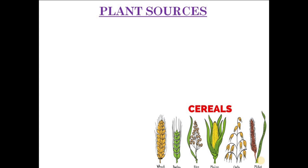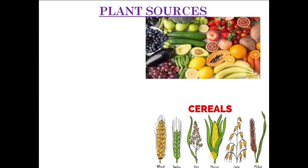Let's begin with plant sources. Here we have an example of cereals. In this picture we can see wheat, barley, rice, maize, oats, and millets — these are some of the common cereals that we eat. Cereals are sources of carbohydrates. Fruits and vegetables are rich sources of vitamins, minerals, and dietary fiber. Some of the fruits and vegetables include carrots, cauliflower, spinach, tomato, apple, and papaya.